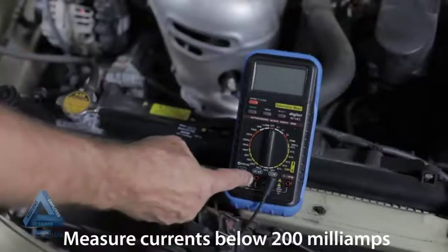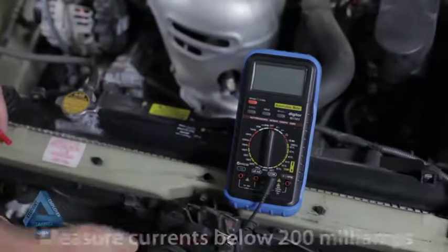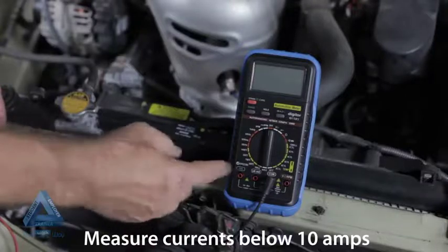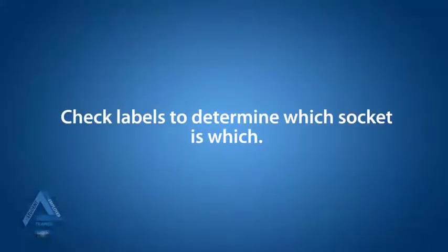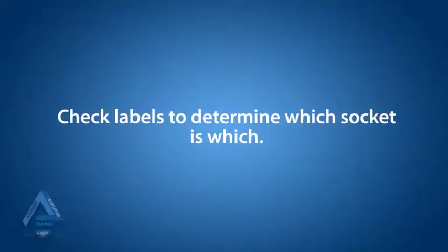One socket is for measuring currents below 200 milliamps and the other is for measuring currents below 10 amps. We can check the labels on the multimeter to determine which socket is which.